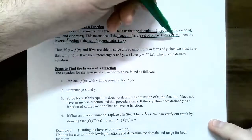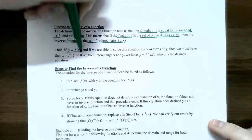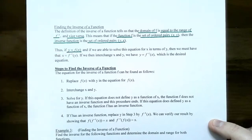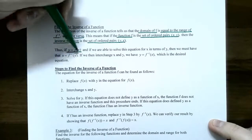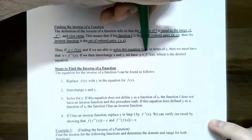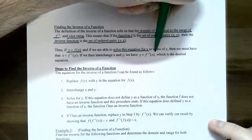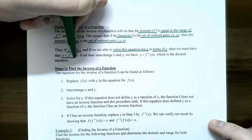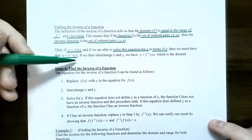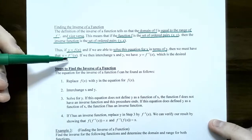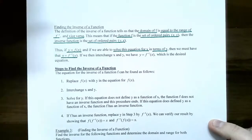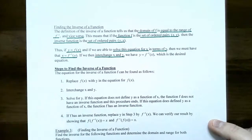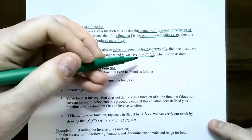In other words, if you write y equals f of x — where x is the input and y is the output — if you can take this equation and solve for x in terms of y, then you get the inverse function. The equation will look like x equals some formula in terms of y, and that turns out to be the inverse function of f. So you can interchange the x's and the y's in your equation, and when you solve for y, you find the inverse function.